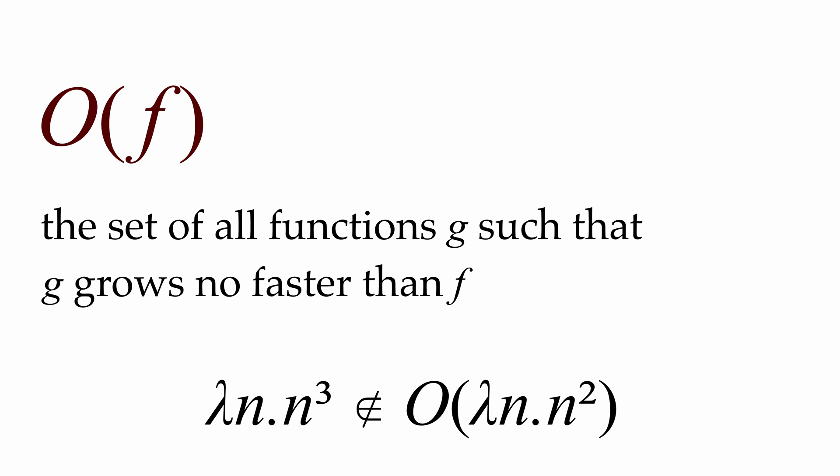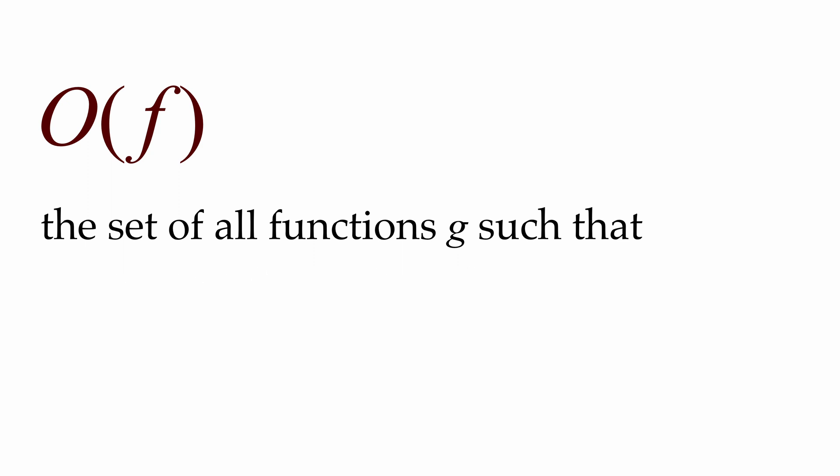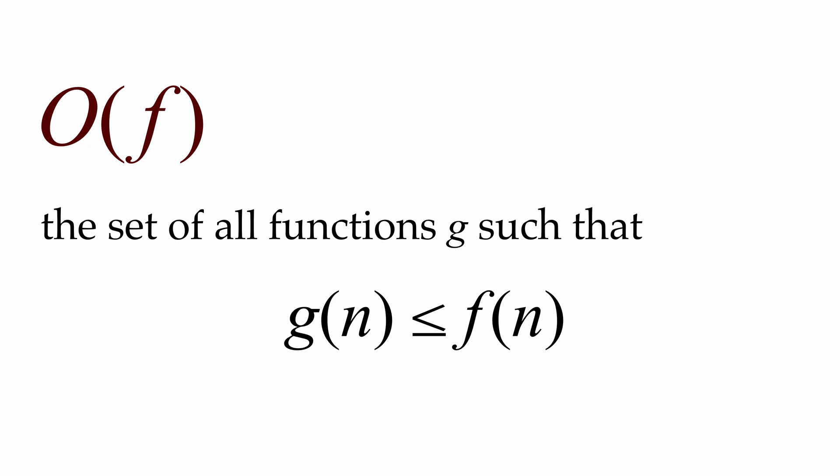That's not a very precise definition, so let's provide a formal definition of big O. An initial definition might be to say that big O of f is the set of all functions g such that for all n, g(n) is less than or equal to f(n). But that's not quite right. First, we're trying to characterize what happens when inputs get large, so it doesn't matter as much which function is larger when the inputs are small. We care about which one is eventually larger, so we'll say that g(n) ≤ f(n) must hold for all n larger than some value n₀.